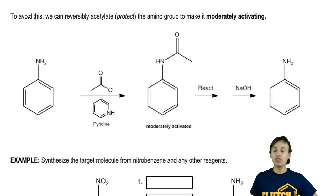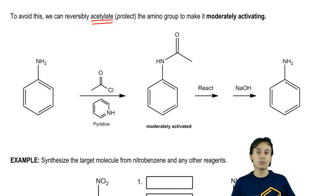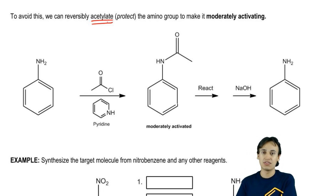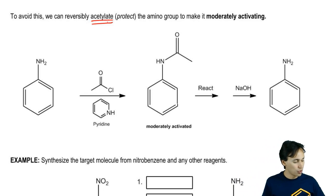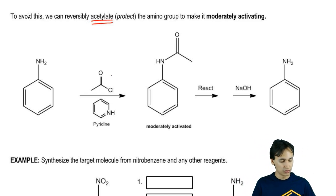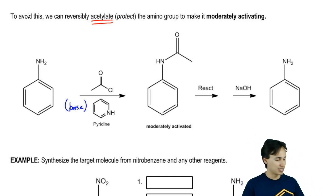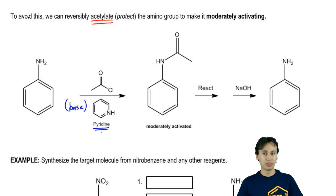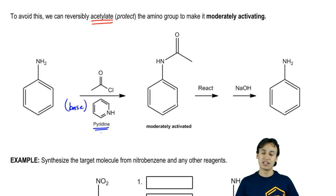How do we avoid this? What we do is something called acetylation. Acetylation is a reversible reaction that makes the aniline less reactive — still activating, but less reactive — so that we can get a single desired product. Acetylation takes an acid chloride with some kind of base, because it's a base-catalyzed mechanism. In this case I'm using pyridine, which is a very popular base in this chapter. It's aromatic itself, but you could use any other base.